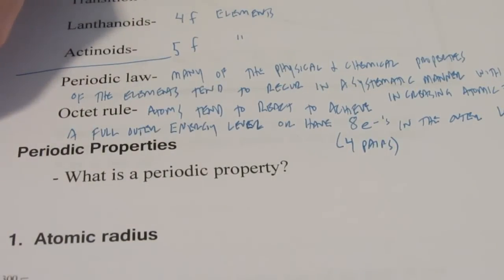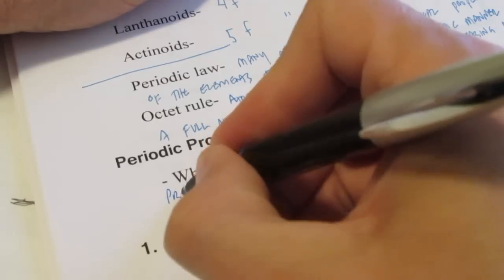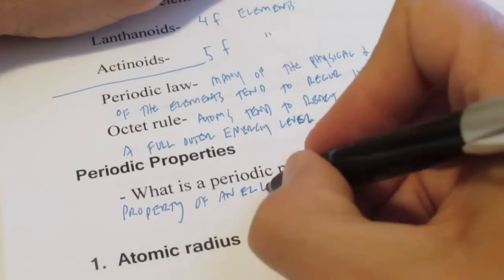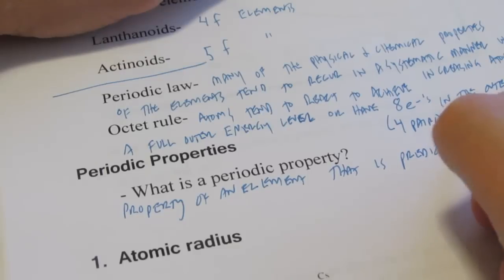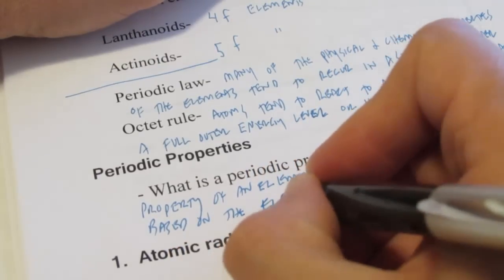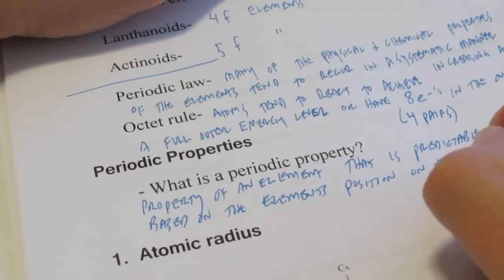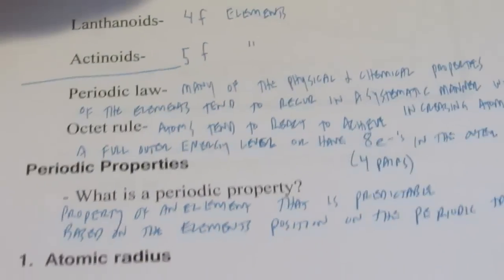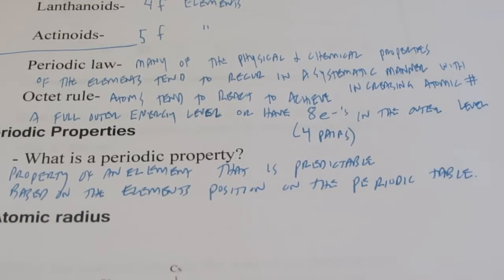Let's talk about a couple of chemical properties. A chemical property is a property of an element based on the element's position on the periodic table. By looking at the periodic table and identifying the element's position, we can identify certain properties of that element, and there are many of them.